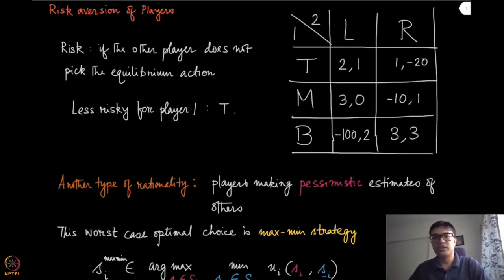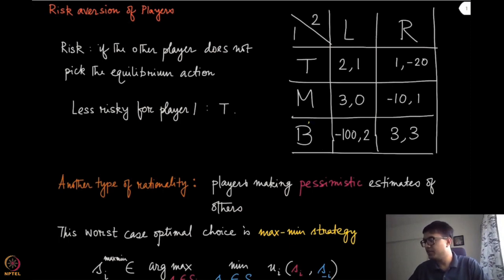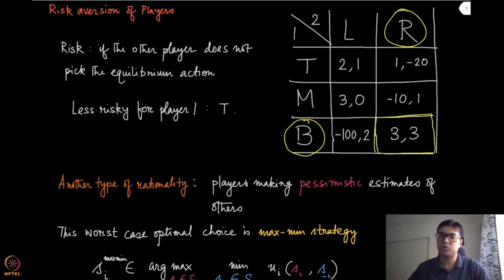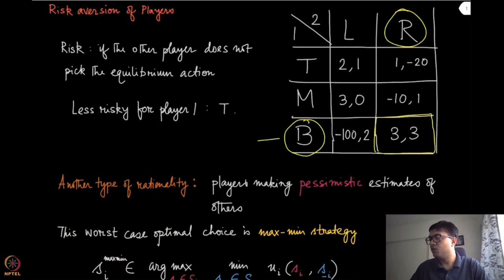Let us look at one example. Suppose in this game on the right-hand side, player one has three strategies, player two has two strategies, and it is not very difficult to figure out which one is the Nash equilibrium — essentially B comma R is the Nash equilibrium for this game. Now if you assume that player two is not capable of taking the most intelligent decision, and it changes its strategy from R to L, then for player one, playing B is very risky because it can jump from three to minus hundred.